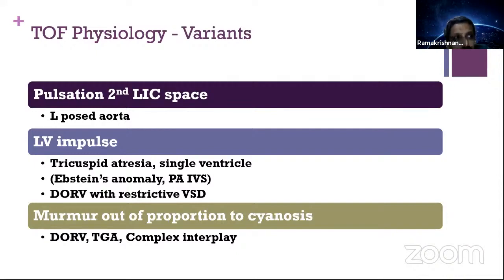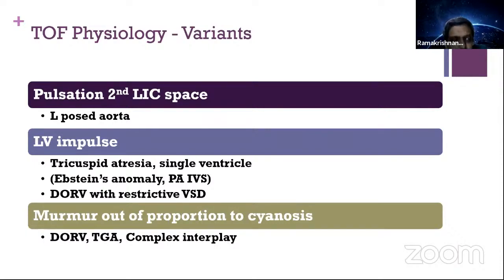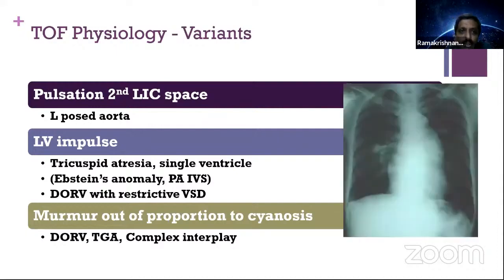The answer to the commonly asked question — why is pink tetralogy pink and blue tetralogy blue — is the amount of pulmonary blood flow. What determines the degree of cyanosis in any cyanotic congenital heart disease, except admixture and TGA physiology, is the amount of pulmonary blood flow. With the same amount of gradient, the flow may be different because the resistance offered by different systems differs.